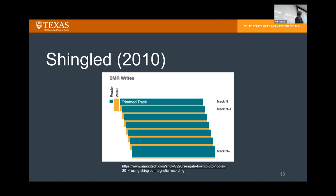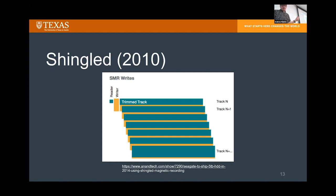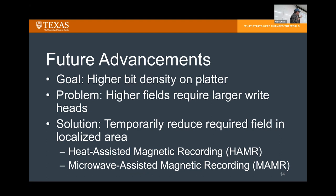Shingled magnetic recording was a surprisingly big advancement in data storage density. The write head is significantly bigger than the read head — it takes much more to change a magnetization than to detect it. Seagate's solution in 2010 was to start overwriting portions of previous tracks, as long as the overlap wasn't under the read head. One downside is increased write time, since changing track N+1 first requires rewriting track N+2 to avoid data loss. This technique increased data storage capacity by about 25 percent immediately upon release.